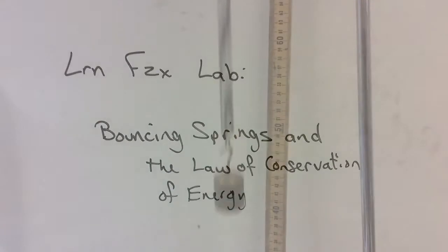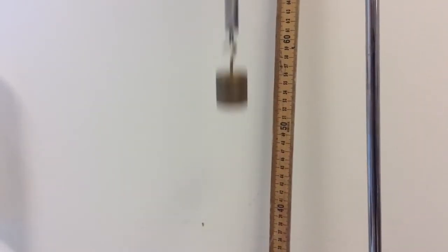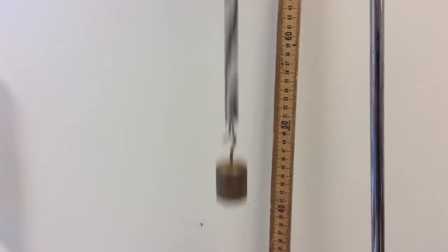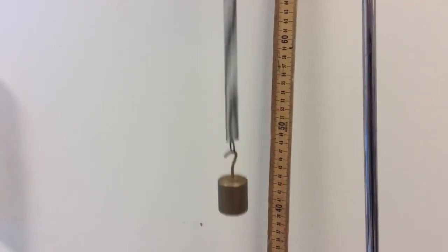In this lab, you are going to bounce a mass up and down on a spring like you see here and measure everything you need to calculate the gravitational potential energy, elastic potential energy, and kinetic energy. The total, of course, should be the same at each point.